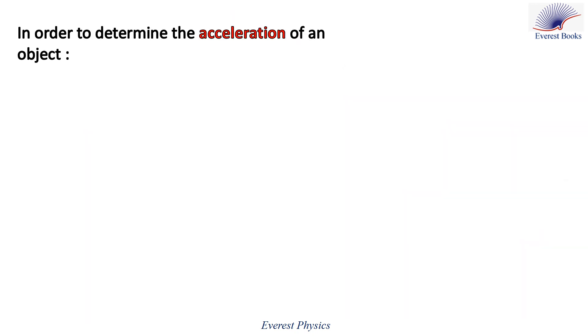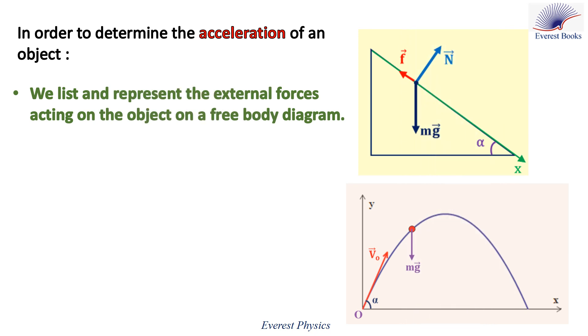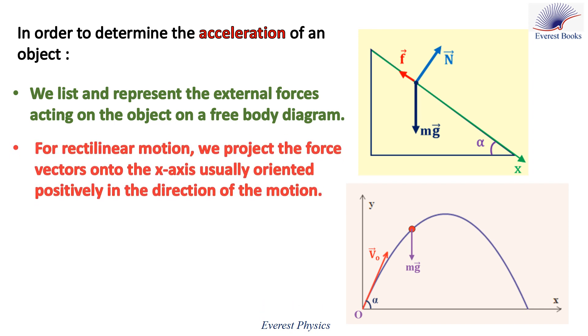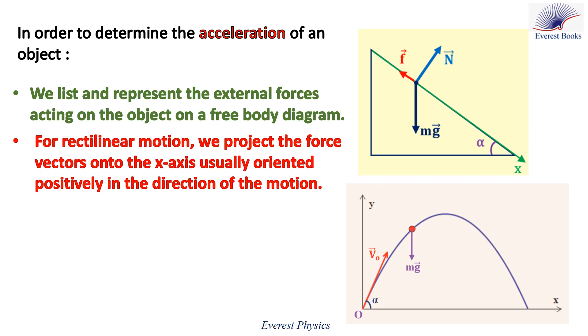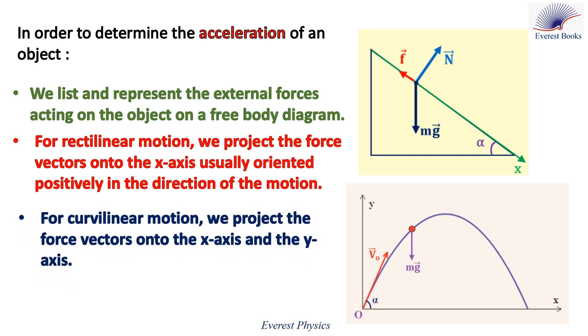In order to determine the acceleration of an object, we list and represent the external forces acting on the object on a free body diagram. These two figures are two examples of a free body diagram. For rectilinear motion, we project the force vectors onto the x-axis, usually oriented positively in the direction of the motion. For rectilinear motion, we project the force vectors onto the x-axis and the y-axis, and then we determine the acceleration applying Newton's second law.